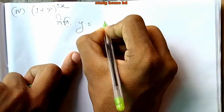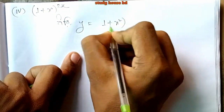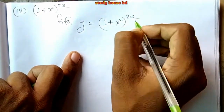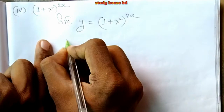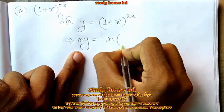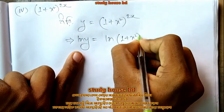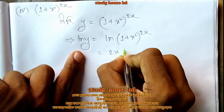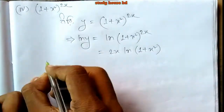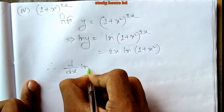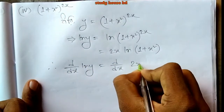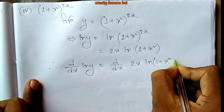Now the fourth problem: y equals (1 plus x squared) to the power 2x. Taking the natural log of both sides: ln y equals 2x times ln(1 plus x squared). Now differentiating both sides with respect to x.